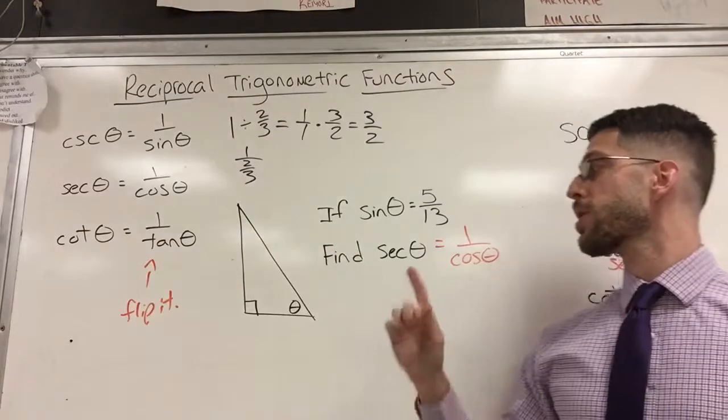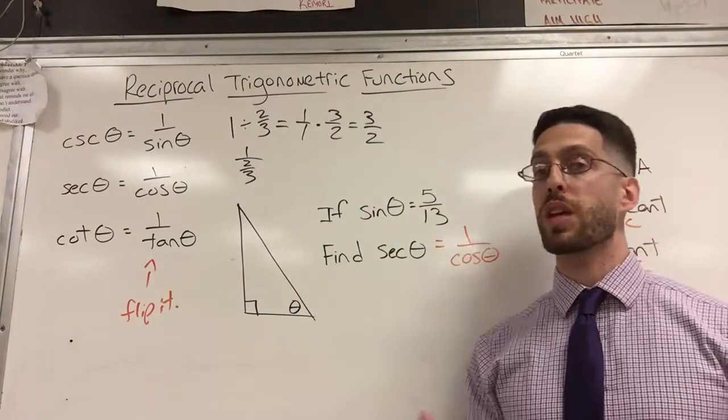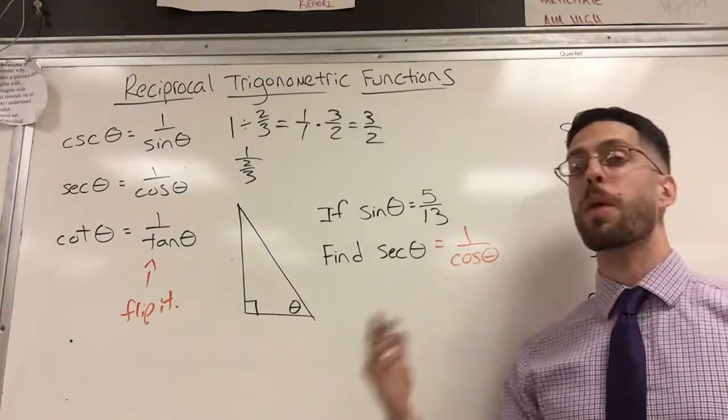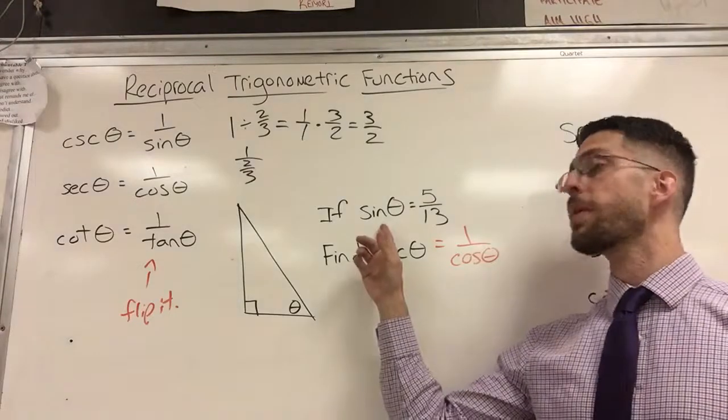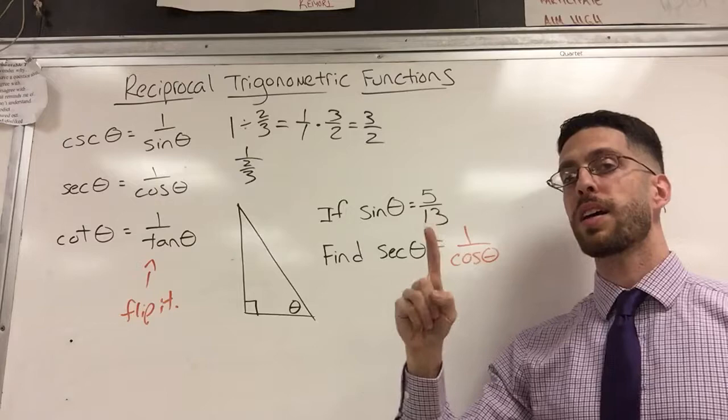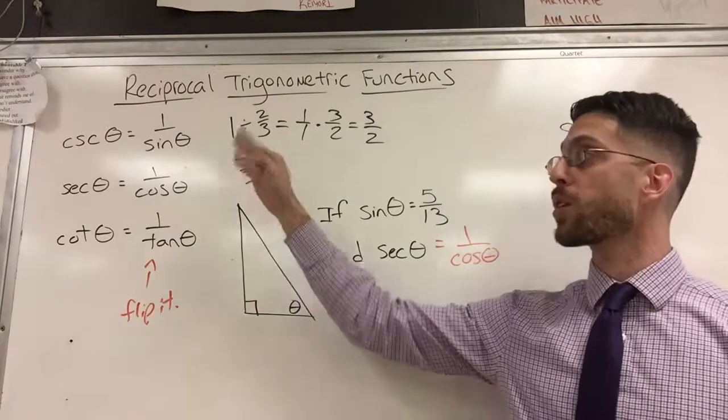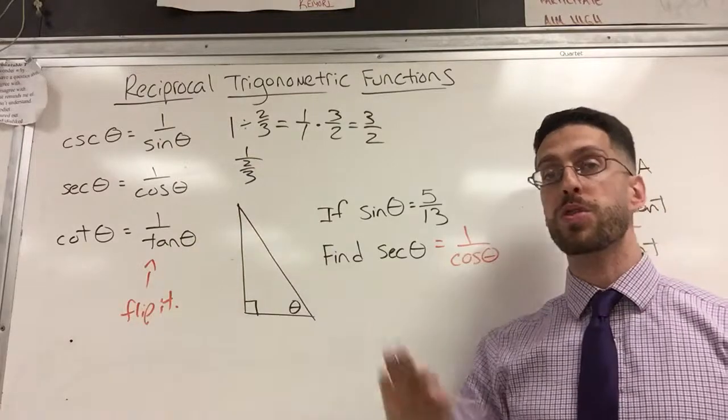But the given information doesn't give me cosine. The given information gives me sine. Depending on your question, the given information might give you cosine or it might make it more complicated. The reason I made it more complicated was to demonstrate that all you need is one fact and you can find all six functions. Sine, cosine, tangent, cosecant, secant, and cotangent. All six of them.